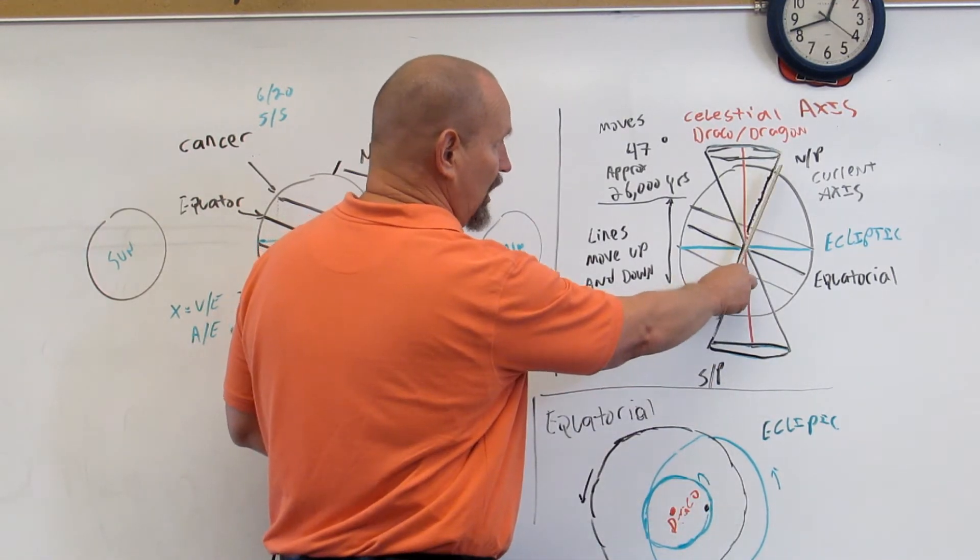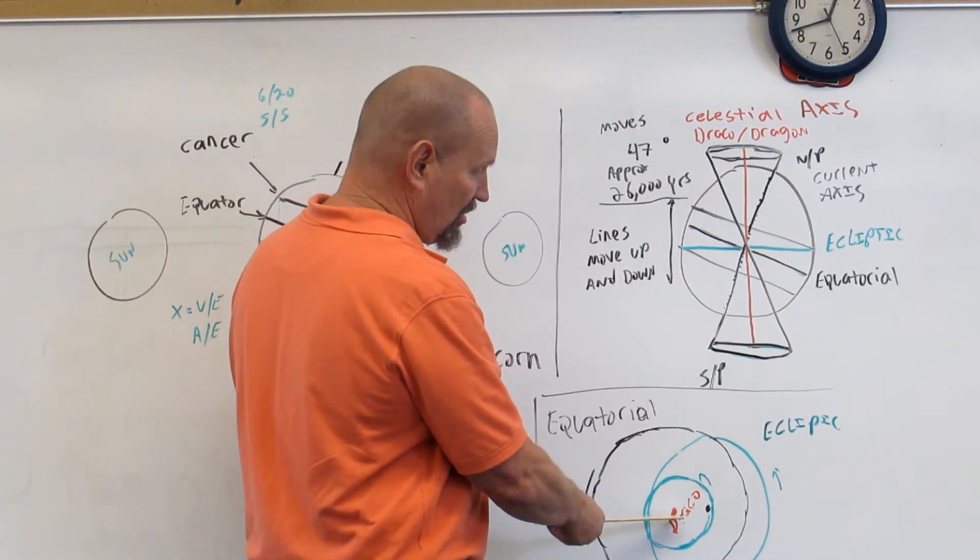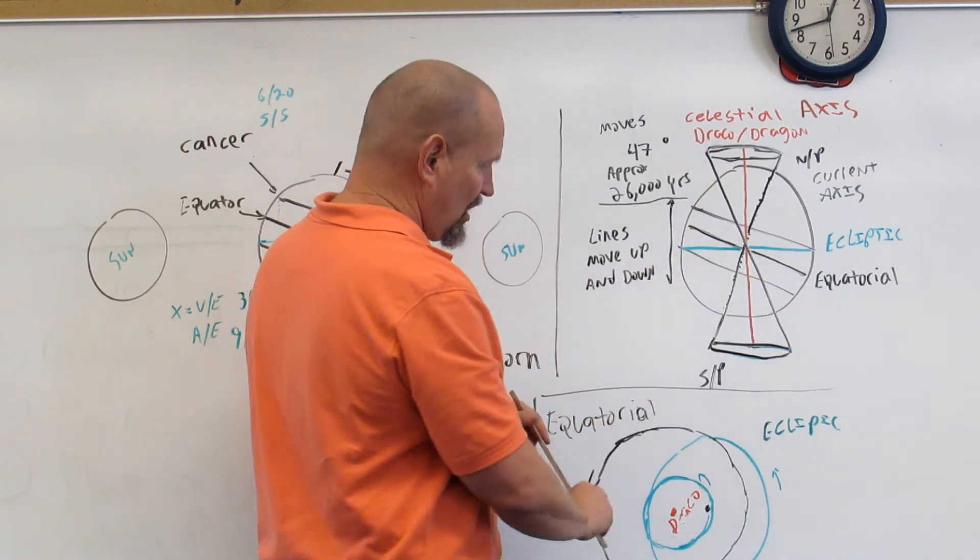So this would say, let's say this is the North Pole. And then this dot right here represents the celestial axis.